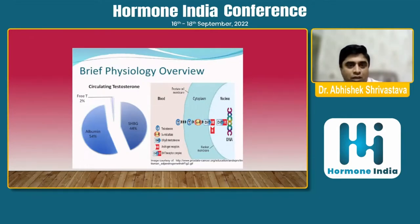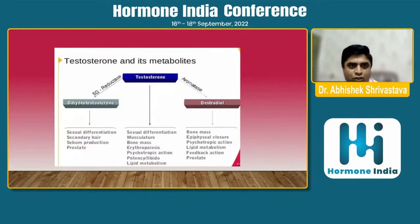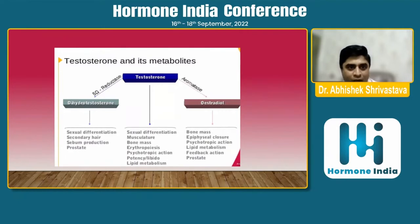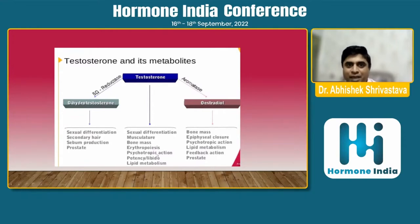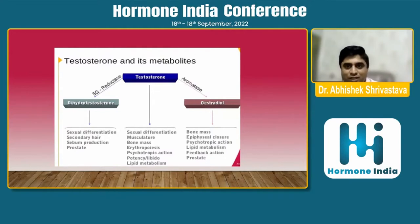How testosterone affects our body: it governs sexual differentiation, secondary hair differentiation, differentiation of the prostate lining, bone mass, erythropoiesis, psychotropic actions, libido — one of the most important — lipid metabolism, bone mass differentiation, and epiphyseal closure in the early stages of life. These are the testosterone metabolites and their functions.